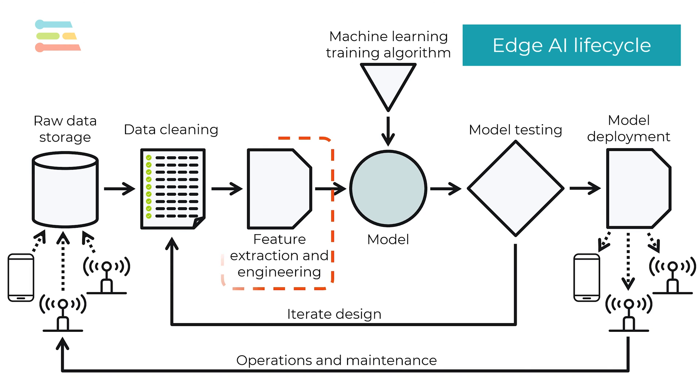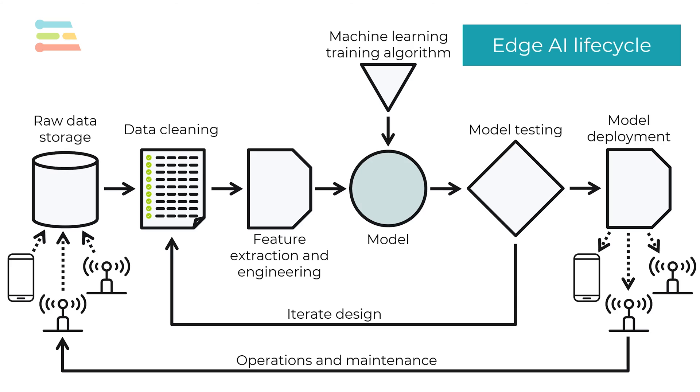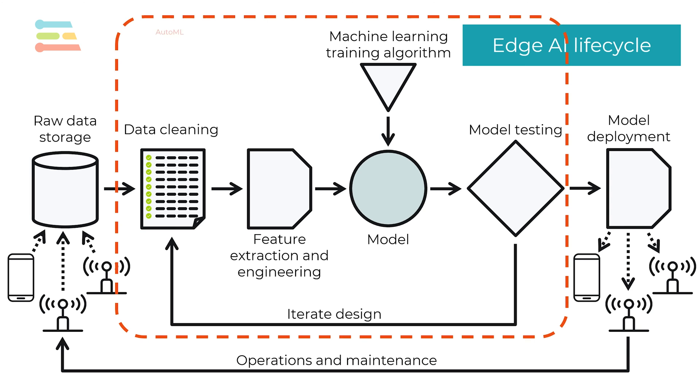The feature engineering process is usually set by data scientists or the machine learning engineering team. As a result, the exact methods of extracting features are usually set and therefore already automated if you need to run them again. However, what if you wanted to automatically determine new and better ways of extracting features whenever new data shows up in your storage?